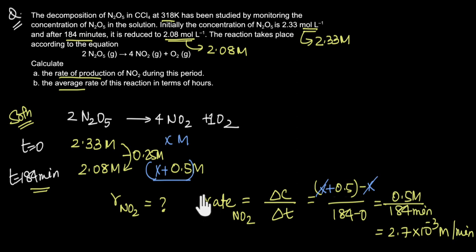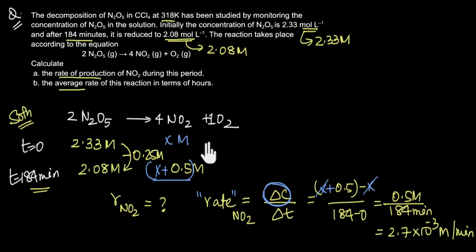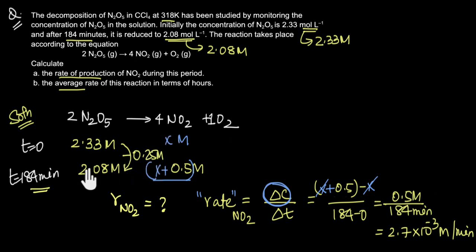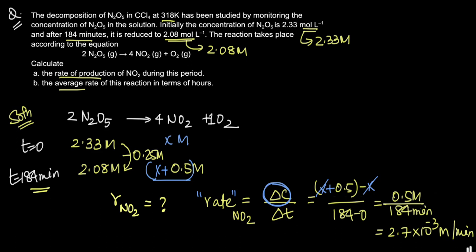When calculating the rate of disappearance of reactants or rate of appearance of products, what we are really concerned with is the change in concentration, rather than the exact values of the initial and final concentrations. So 0.25 molar of N2O5 reacting in 184 minutes will always increase the concentration of NO2 by 0.5 molar, giving a rate of formation of 2.7 × 10⁻³ molar per minute.